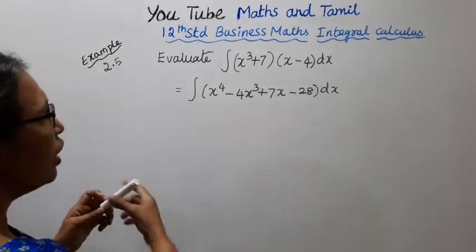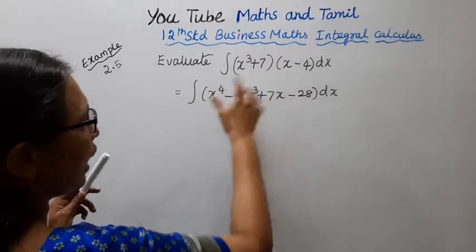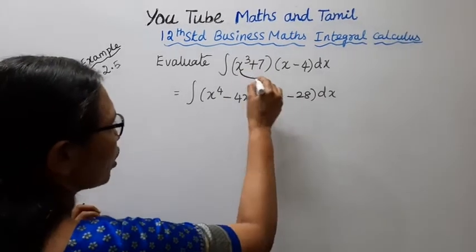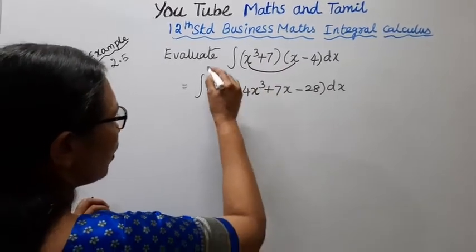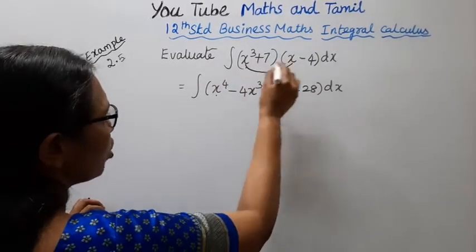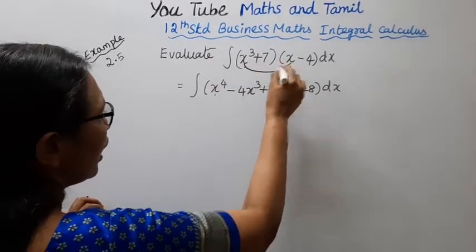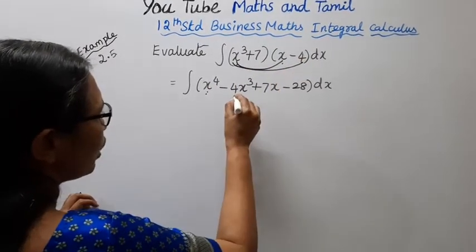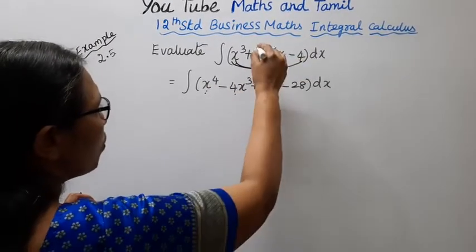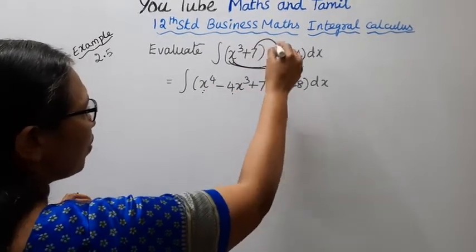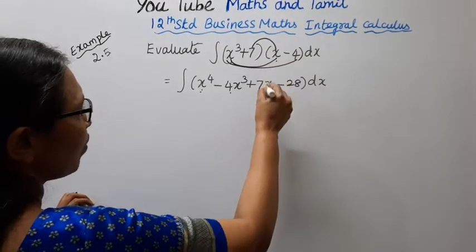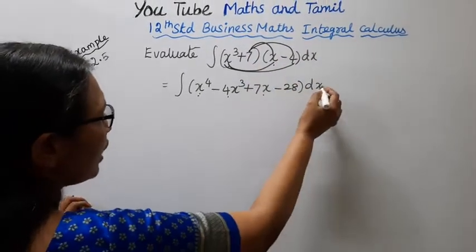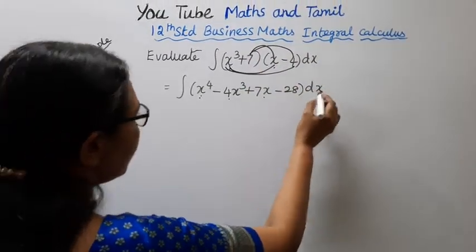If we do this, we will multiply: x cubed into x gives x to the power 4, x cubed into minus 4 gives minus 4x cubed, plus 7 into x gives 7x, and 7 into minus 4 gives minus 28 dx.